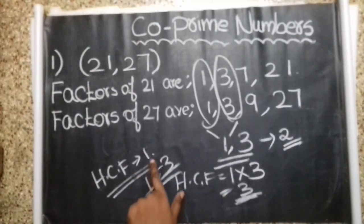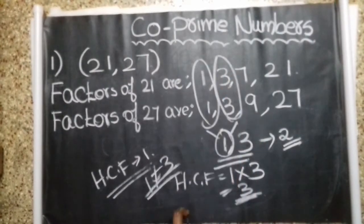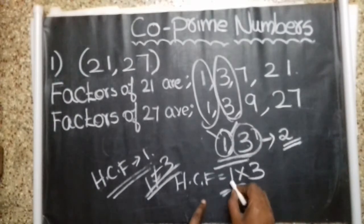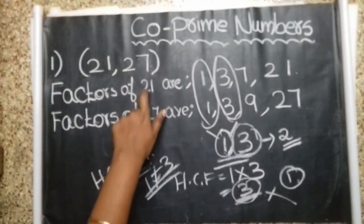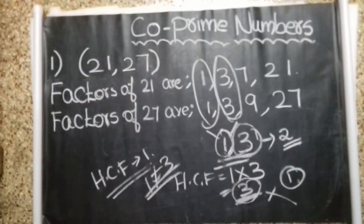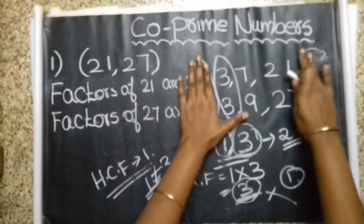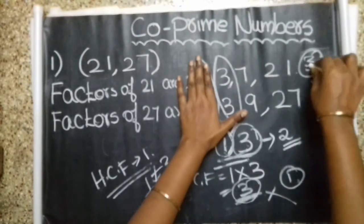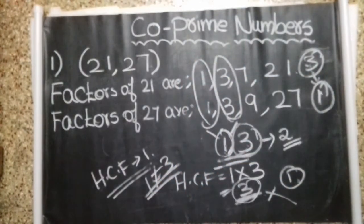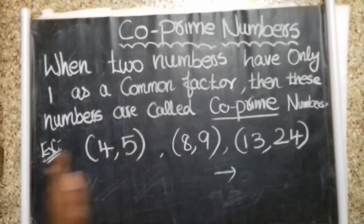According to the definition, the HCF must be number 1 for co-prime numbers. But there is another common factor which is 3, so the HCF is 3. That must be number 1, but it is 3. According to the definition, the common factor must only be number 1. But here it is 3, so it is not a co-prime number.